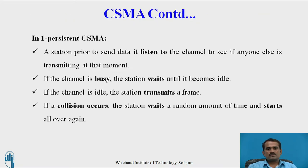First one is One-Persistent CSMA. A station, prior to sending data, listens to the channel to see if anyone else is transmitting at that moment. If the channel is busy, the station waits until it becomes idle. If the channel is idle, the station transmits a frame. If a collision occurs, the station waits a random amount of time and starts all over again.